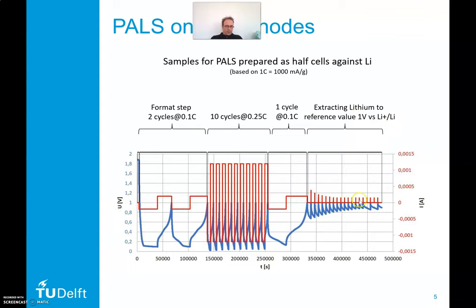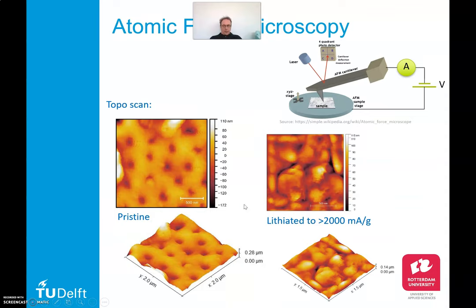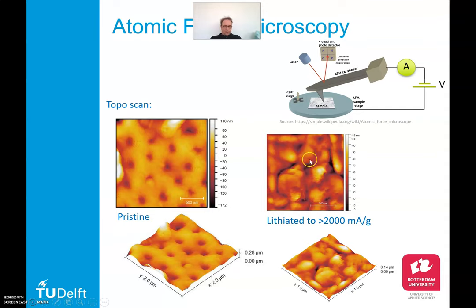By this procedure you see these steps — charging against lithium, then rest and charging, rest and so on, until we reach almost a value of 1 volt. When we did atomic force microscopy on the sample, we had the following results. We did a topo scan of the pristine material and you can see clearly that there are holes in the material — the pores are clearly visible in this scan. During this experiment we were able to lithiate the sample, and after this lithiation — above 2000 mA per gram — you can see clearly that all the pores are closed and the material is totally changed on the surface.